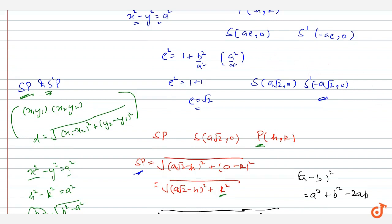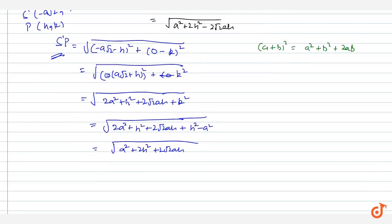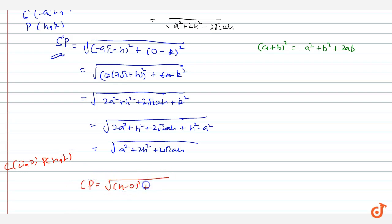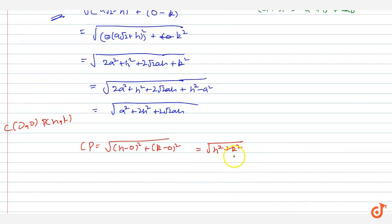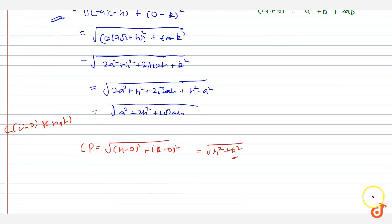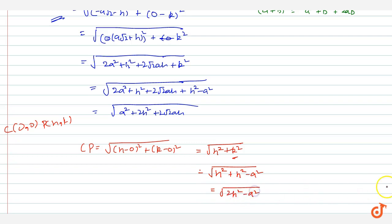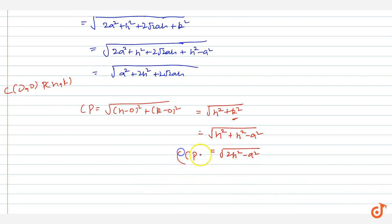CP is the distance from point P to the center. The center has coordinates (0, 0) and P has coordinates (h, k). So CP = √[(h − 0)² + (k − 0)²] = √[h² + k²]. Substituting k² = h² − a² gives CP = √[h² + h² − a²] = √[2h² − a²]. Therefore CP² = 2h² − a².